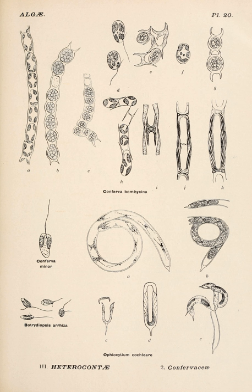Xanthophyte chloroplasts contain the photosynthetic pigments chlorophyll A, chlorophyll C, beta-carotene, and the carotenoid diadynoxanthin. Unlike other heteroconts, their chloroplasts do not contain fucoxanthin, which accounts for their lighter color. Their storage polysaccharide is chrysolaminarin. Xanthophyte cell walls are composed of cellulose and hemicellulose.